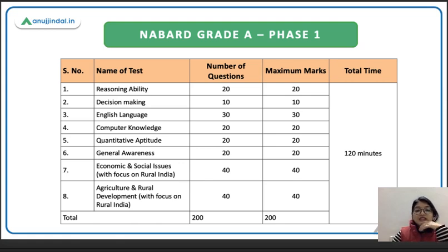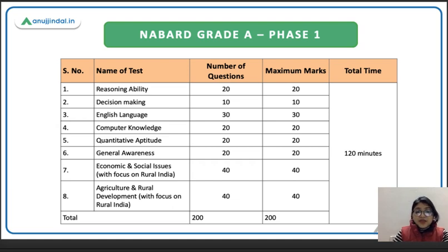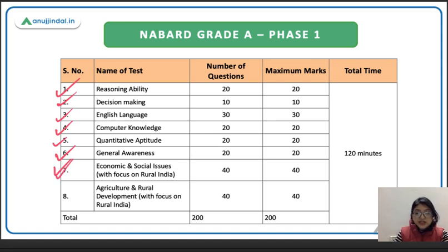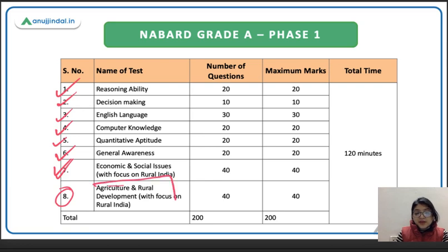NABARD Grade A Phase 1 is your prelims, in which you have eight sections: reasoning ability, decision making, English language, computer knowledge, quantitative aptitude, general awareness — which means current affairs — then ESI, that is Economic and Social Issues covering schemes and current news, surveys and census. And then we have Agriculture and Rural Development, which means 40 questions.